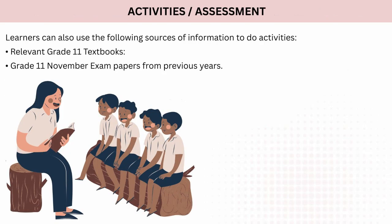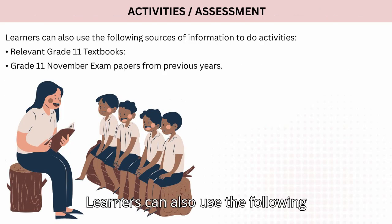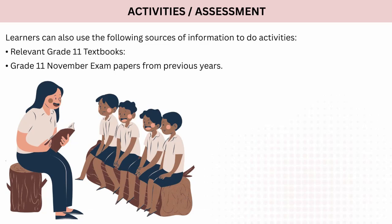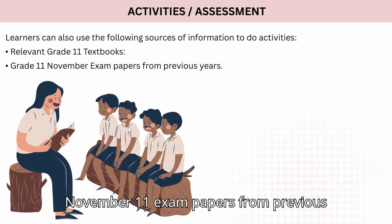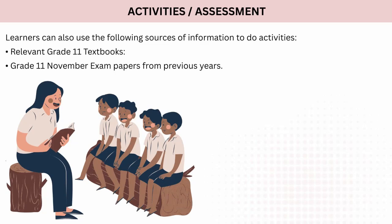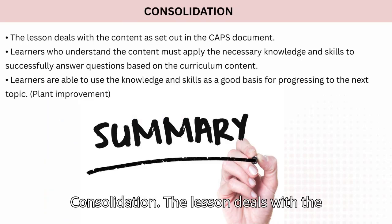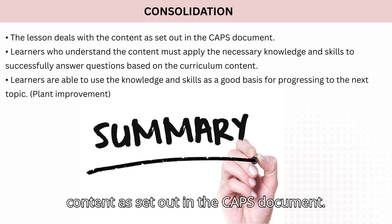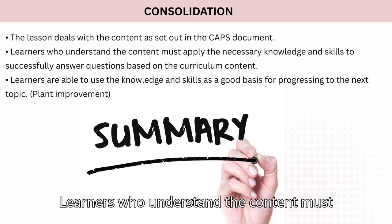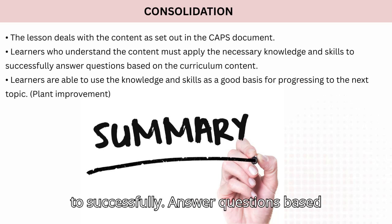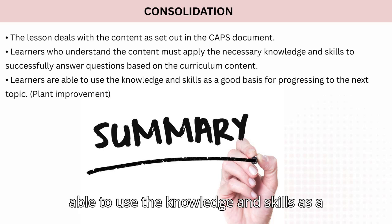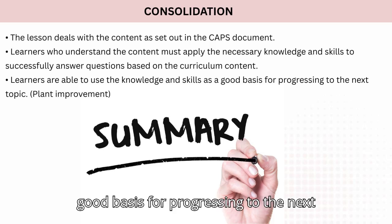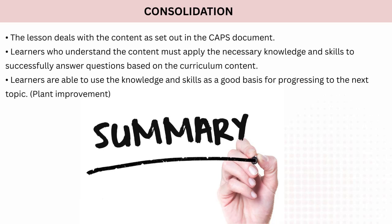Activities and assessment: learners can use the following sources of information — relevant Grade 11 textbooks and Grade 11 November exam papers from previous years. Consolidation: the lesson deals with content as set out in the CAPS document. Learners who understand the content must apply the necessary knowledge and skills to successfully answer questions based on the curriculum content, using this knowledge as a good basis for progressing to the next topic: plant improvement.